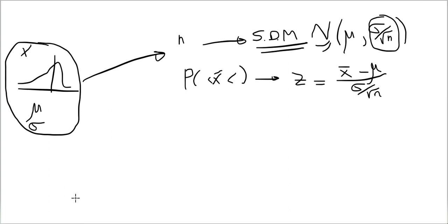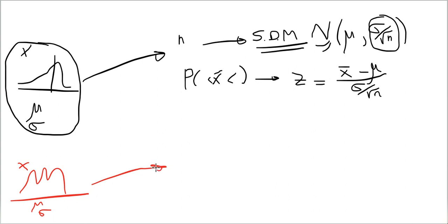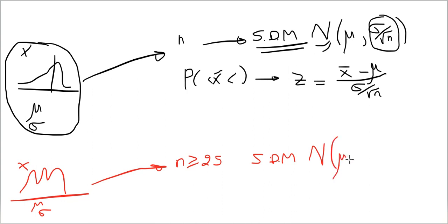Scenario two: what if the variable of interest that you started with is not normal — so it has a weird distribution — but it still has a mu and it still has a sigma? Well, it turns out that if your sample size is greater than or equal to 25, the sampling distribution of the mean — the X̄ values — is still going to be normal, with mu_X̄ equal to mu.